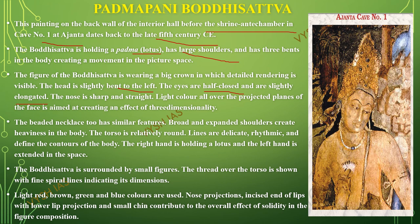The nose is sharp and straight. Light color over the projected planes of the face is aimed at creating the effect of three-dimensionality. The beaded necklace also has similar features. The broad and expanded shoulders create heaviness in the body; the torso is relatively round. The lines are delicate, rhythmic, and define the different contours of the body. The right hand is lowered holding the lotus and the left hand is extended in space. The Bodhisattva is surrounded by small figures. Light red, brown, green, and blue colors are used. The projection of the nose and lower lip contributes to the overall effect of solidity in the figure composition.